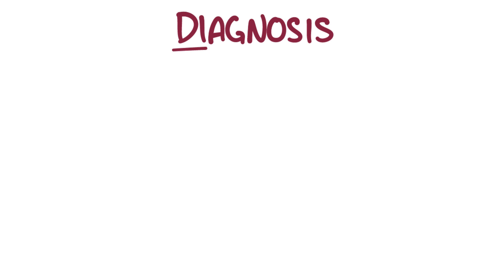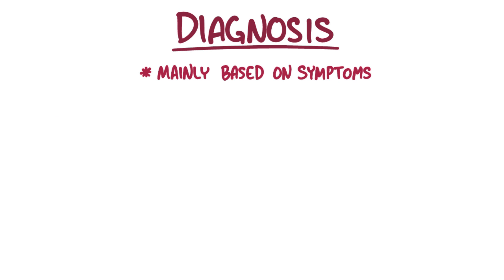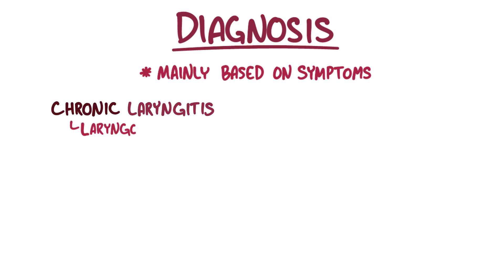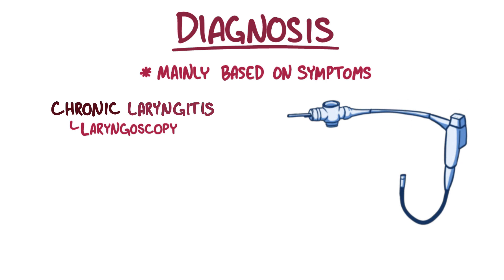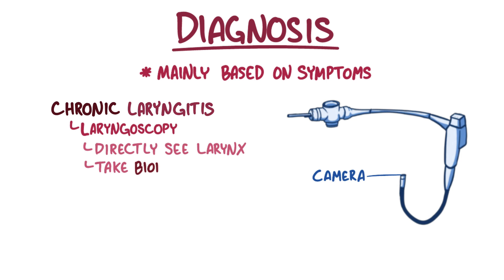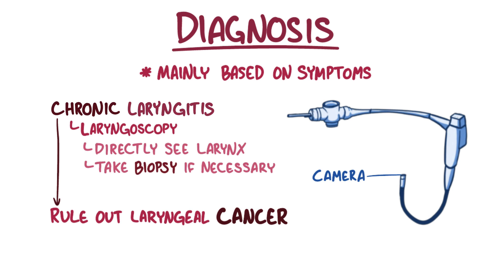Diagnosis of acute laryngitis is mainly based on symptoms. For chronic laryngitis, laryngoscopy can be helpful — that's when a long tube containing a camera is inserted into the mouth to directly see the larynx and to take a biopsy of the tissue if needed. The main purpose of this is to ensure that there is no sign of laryngeal cancer.